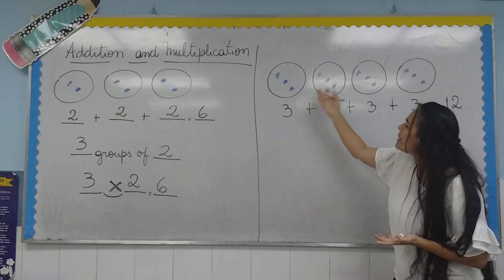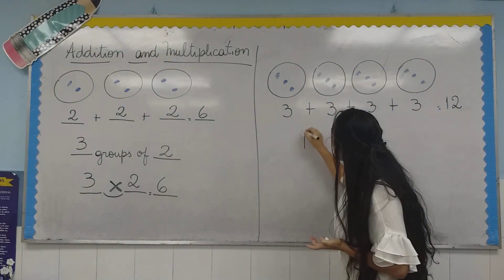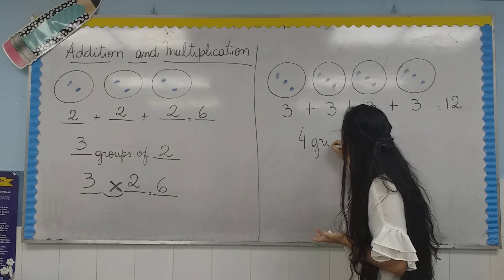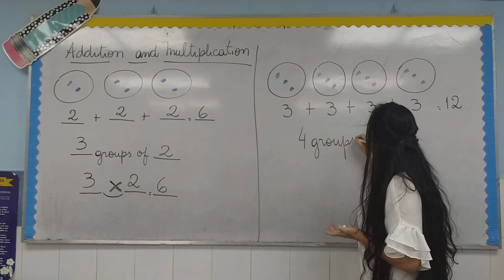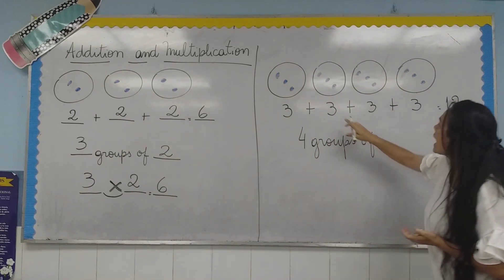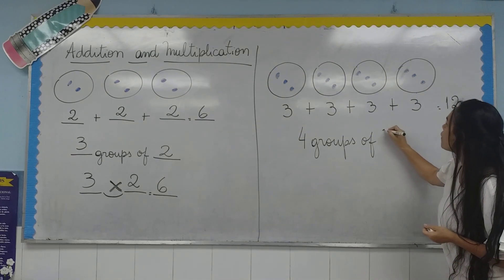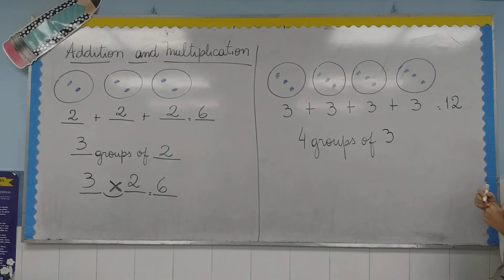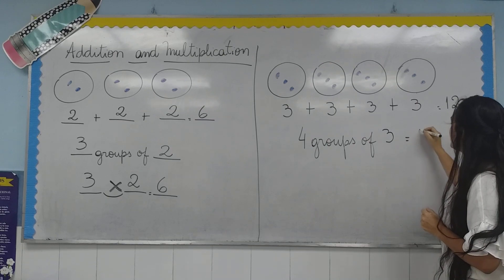So, how many groups do we have? We have four groups. Four groups of how many items in each group? Four groups of three. And the answer is twelve.